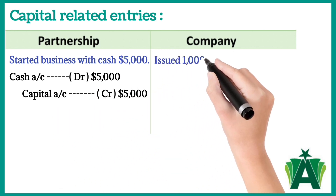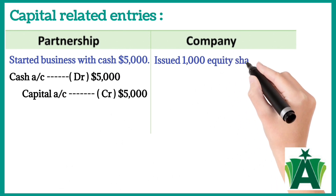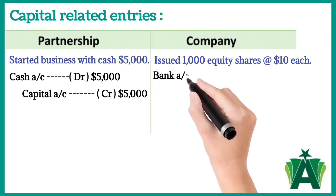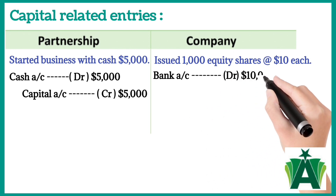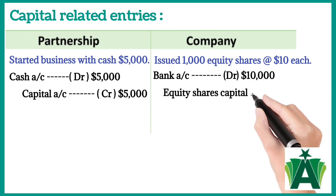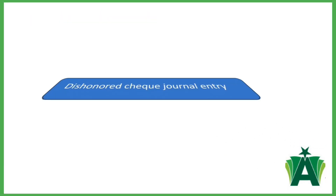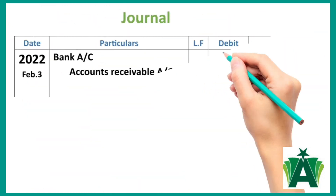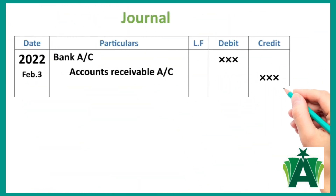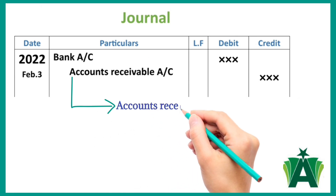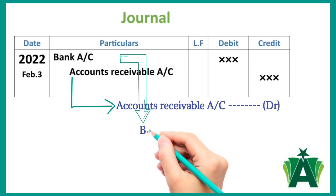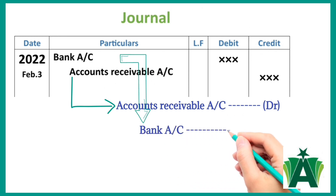When a company issued 1,000 equity shares at $10 each, the journal entry will be: bank account debit $10,000, equity share capital account credit $10,000. For a dishonored check, the journal entry reverses the original entry recorded when the check was received. The accounts receivable account is debited because the customer now owes the business money again, and the bank account is credited because the check was not honored.